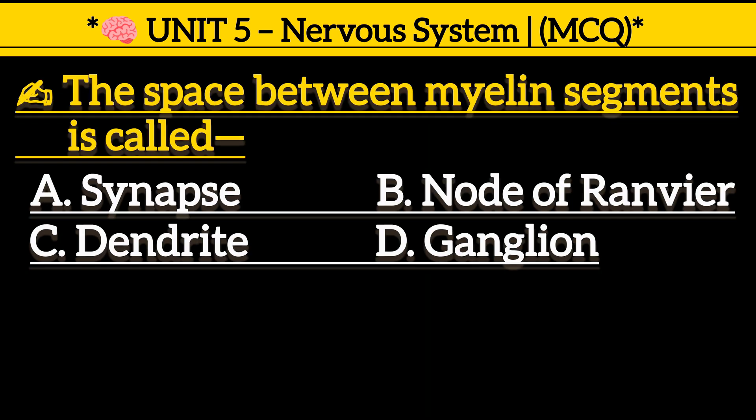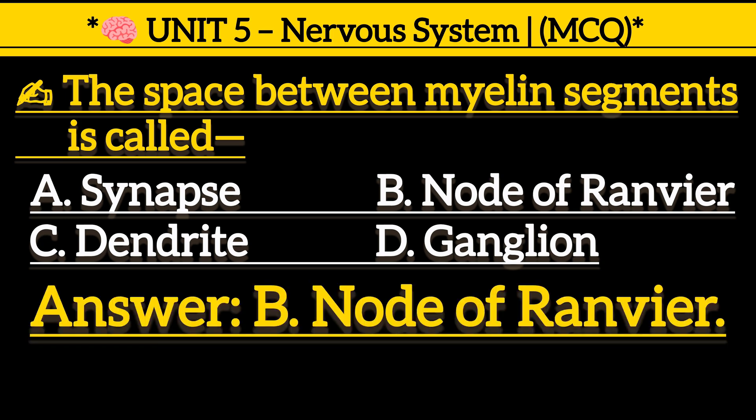The space between myelin segments is called: Option A, synapse. Option B, node of Ranvier. Option C, dendrite. Option D, ganglion. Correct answer is Option B, node of Ranvier.